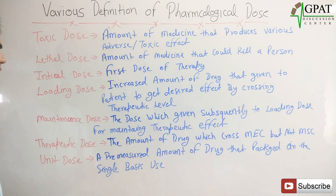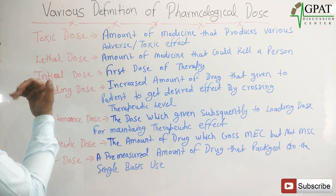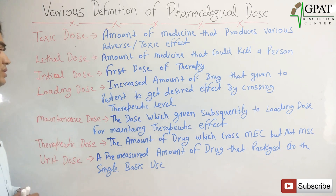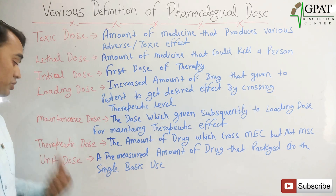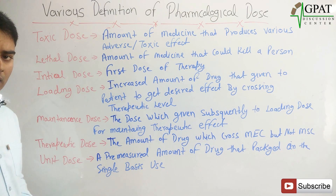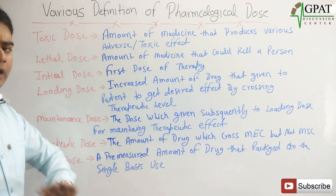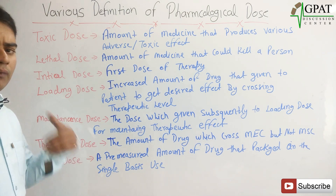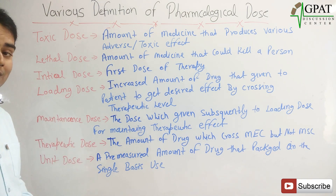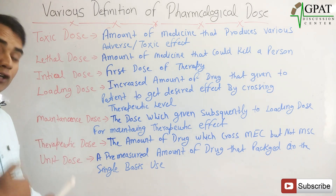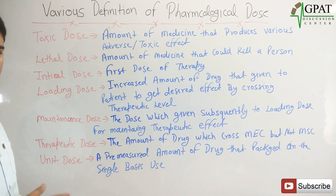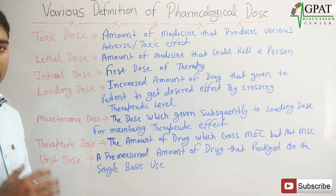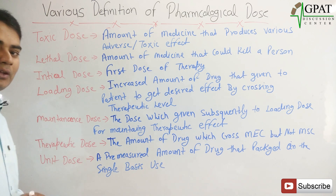So these are the different dose definitions: toxic dose, lethal dose, initial dose, loading dose, maintenance dose, therapeutic dose, and unit dose. I think you should have these clear in your mind — what is the meaning of exactly toxic dose and what is the meaning of lethal dose. All those definitions you should have clear in your mind. Thank you.